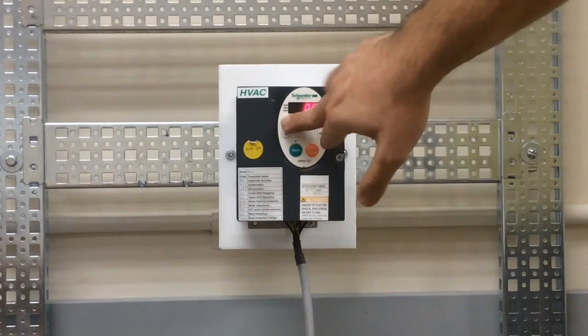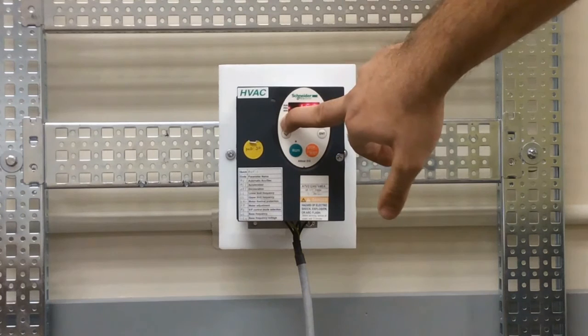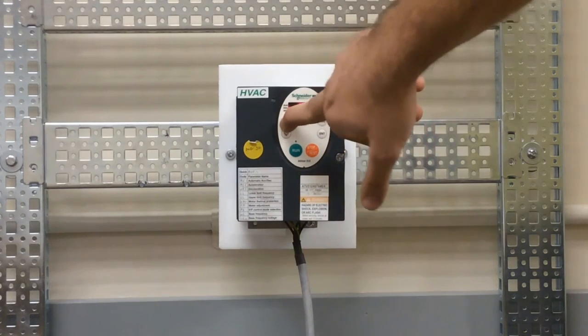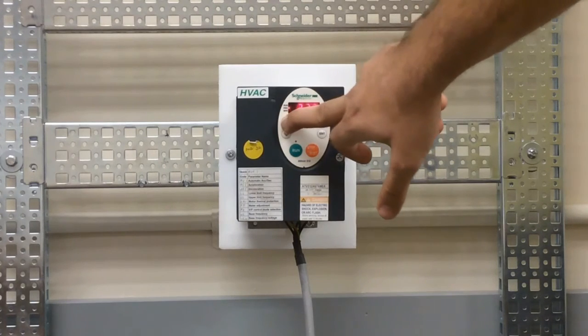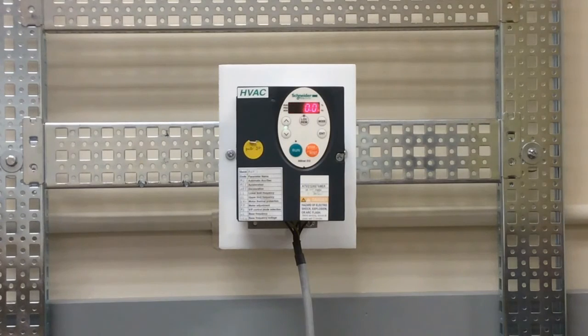With our up and down arrow keys, we go up to thirty and then press enter. By the way, you can make this change while the drive is running or not running—it doesn't really matter.